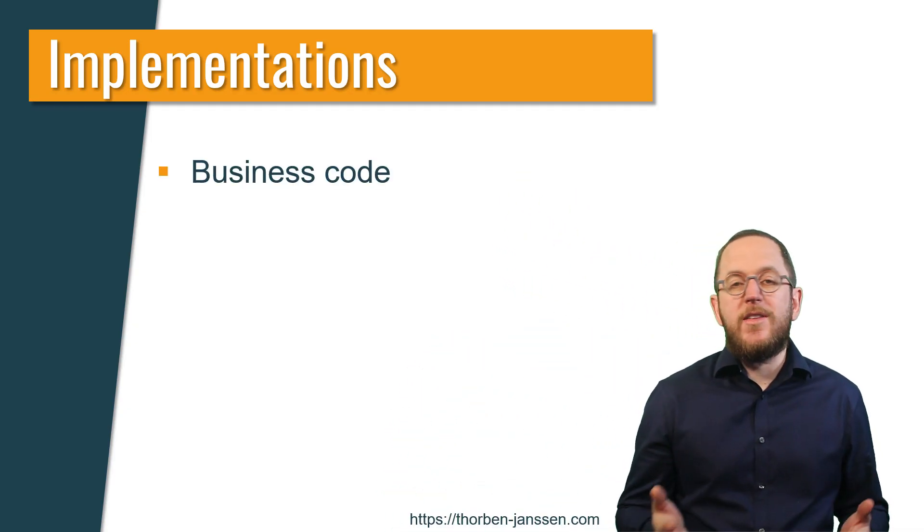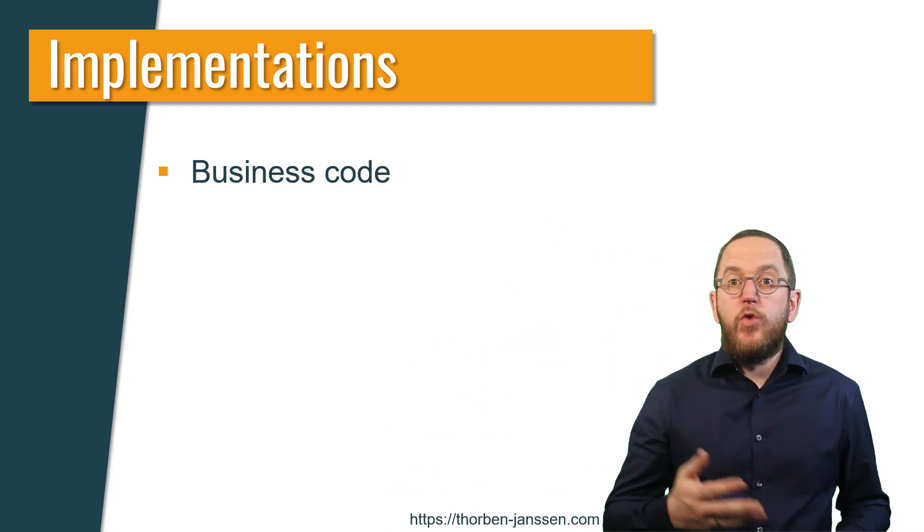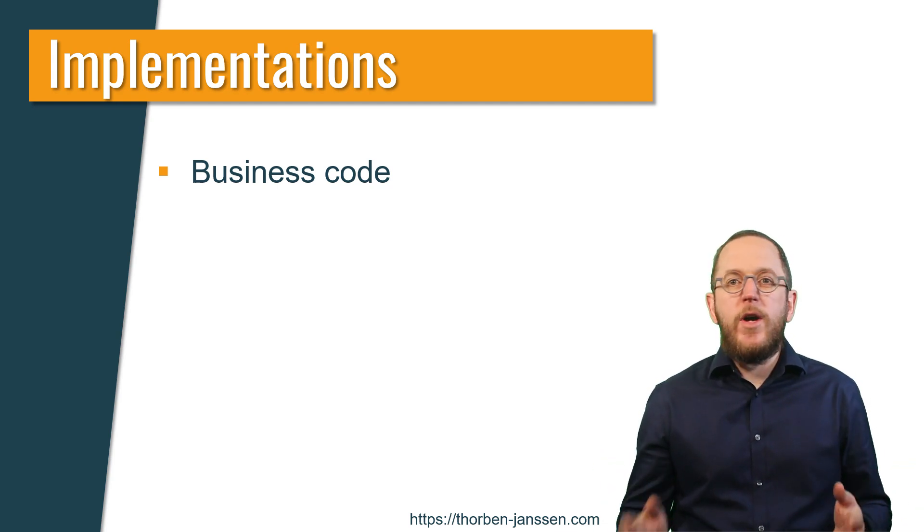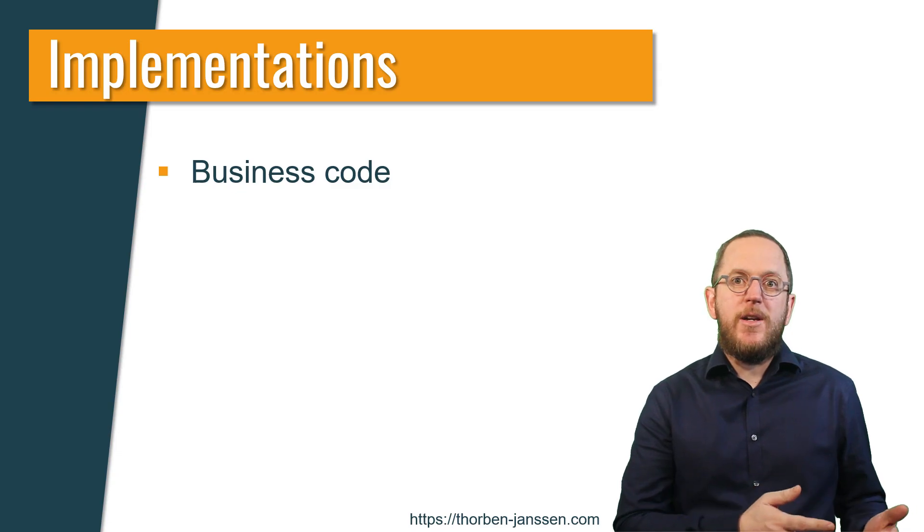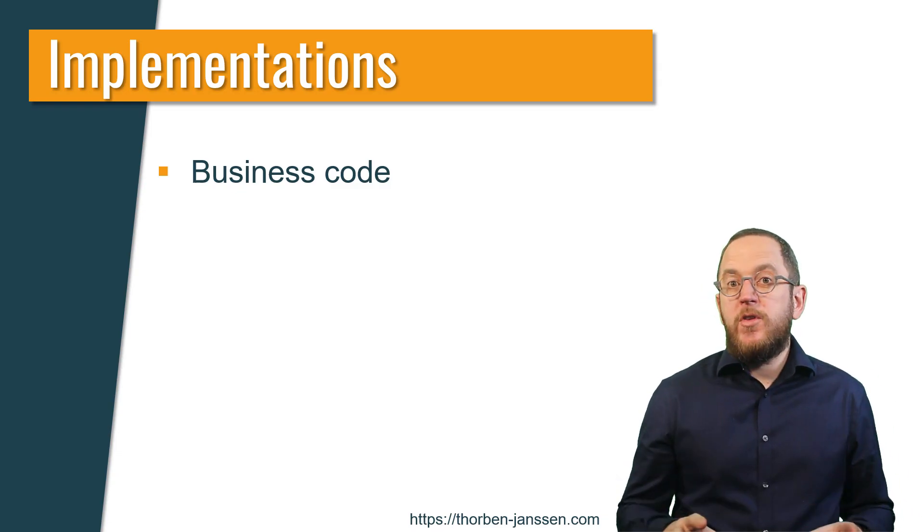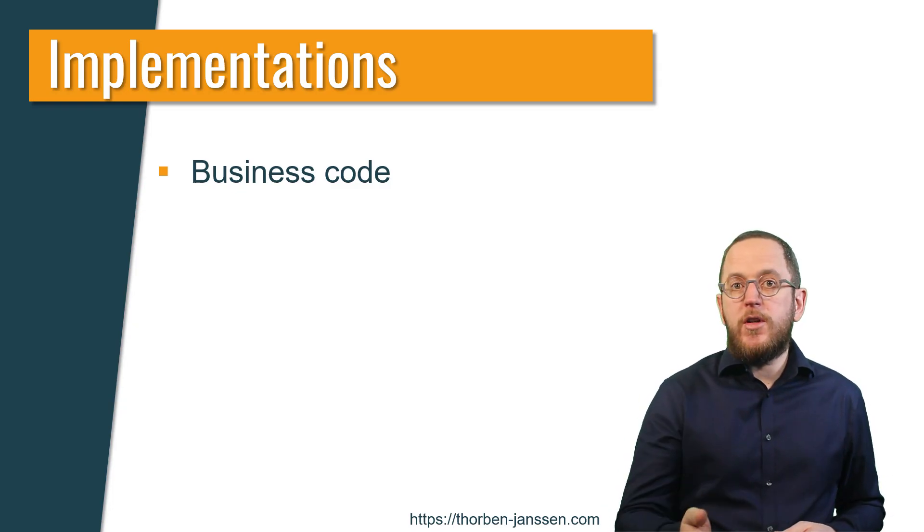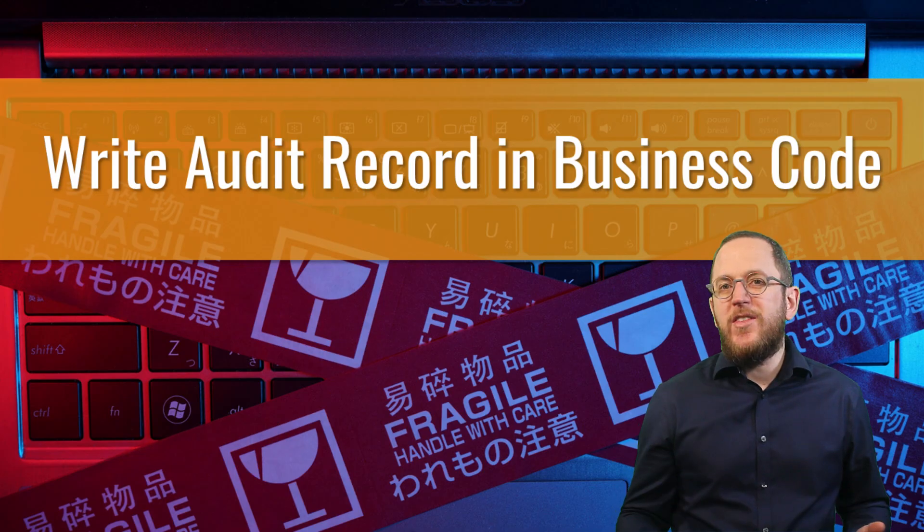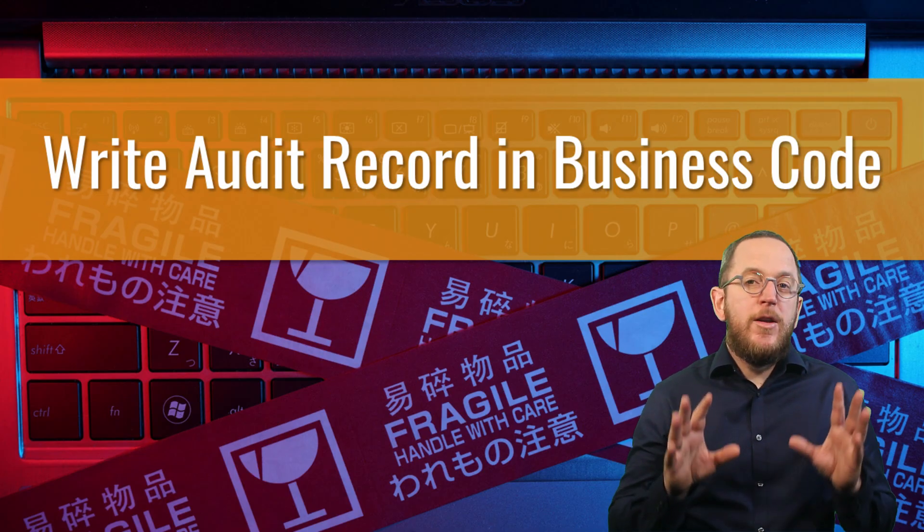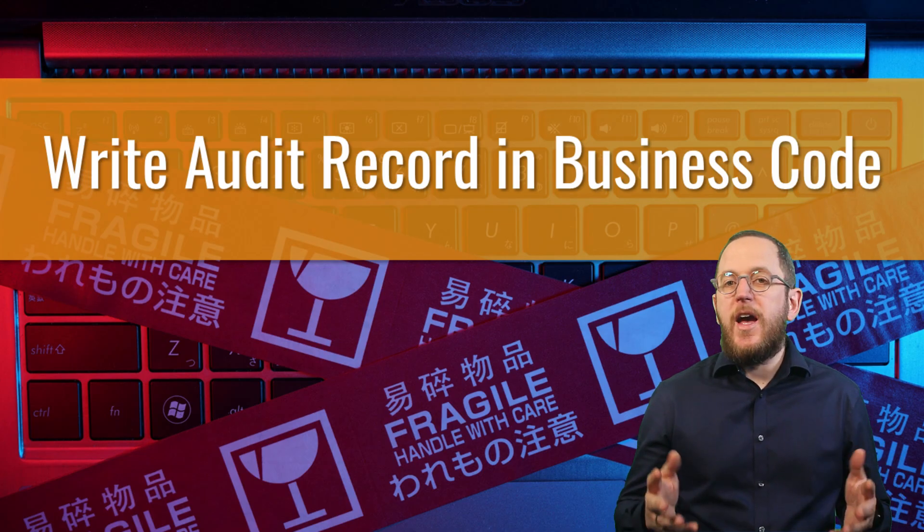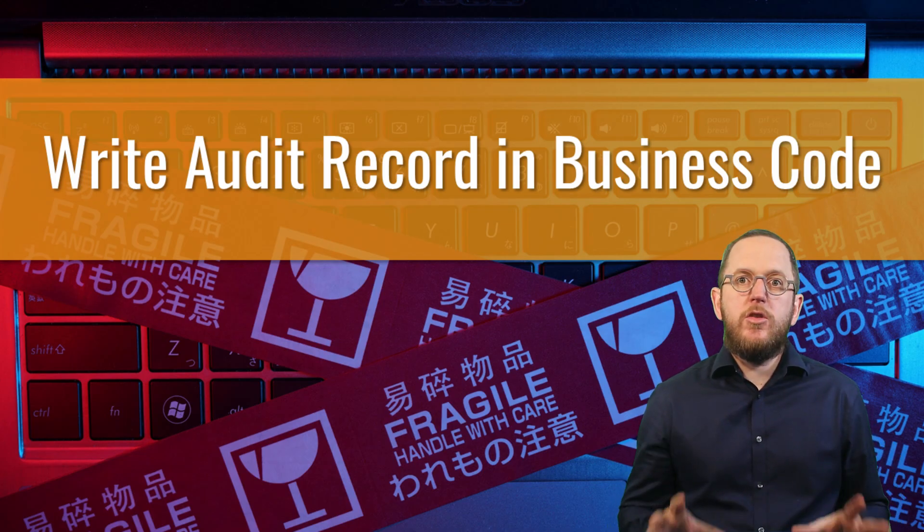The most obvious one is letting your business logic write the audit log. I mean, it already modifies the data, so why not let it write the audit entries as well? Every time you persist, change, or remove a record, you also write the record's new state to the audit table. Sounds easy, but it isn't. Using this approach, you have to implement everything yourself, and I highly recommend not doing that.